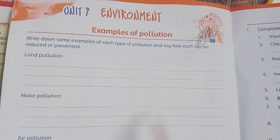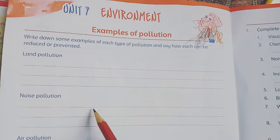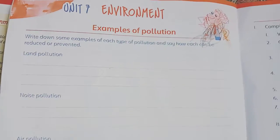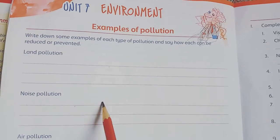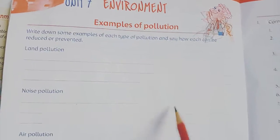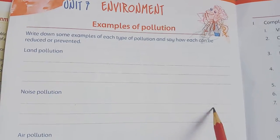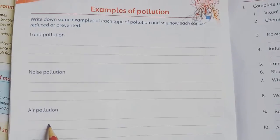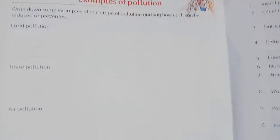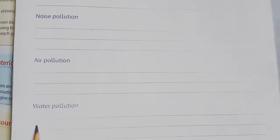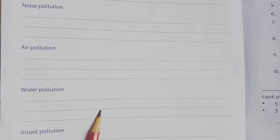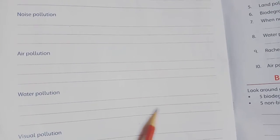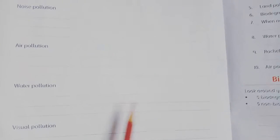For noise pollution, you have to give examples of how we can reduce it — we should avoid noise pollution and reduce the volume of horns in industrial areas and overpopulated areas. Here you can also give examples of air pollution with suggestions, and examples of water pollution showing how it is caused, along with your suggestions.